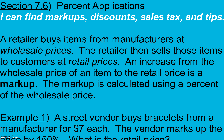A retailer buys items from manufacturers at wholesale prices. The retailer then sells those items to customers at retail prices. An increase from the wholesale price of an item to the retail price is a markup. The markup is calculated using a percent of the wholesale price. To find markup: percent times wholesale price.